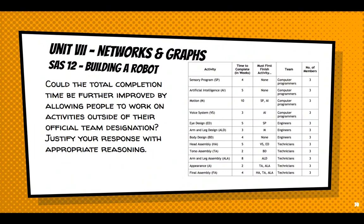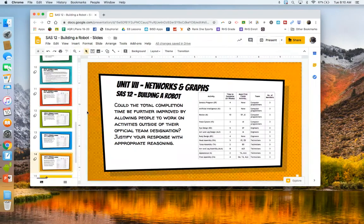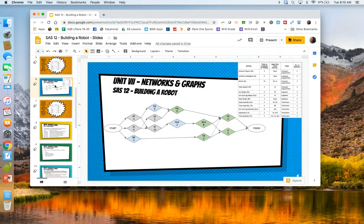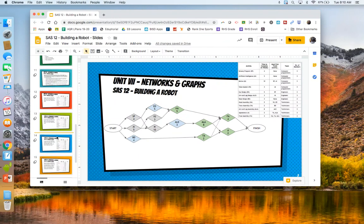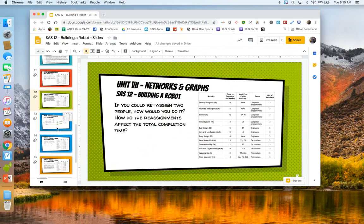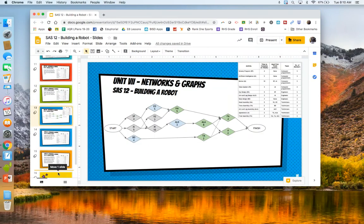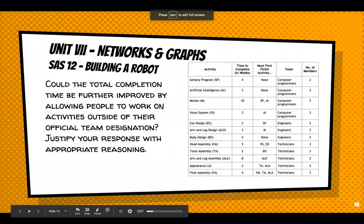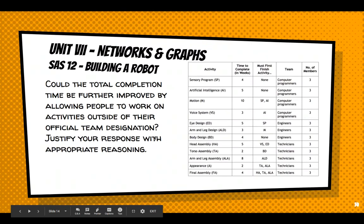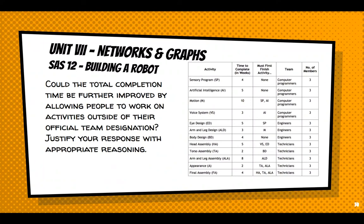All right. This is the same thing, how many people would you could assign anybody? How would do the reassignments affect total completion? It could vastly reduce the total completion time. All right, could the total completion time be further improved by allowing people to work on activities outside of their official team designation? Now I'm going to do ourselves a favor here, I'm going to back out here, I'm going to go back up to where the activity graph is. And I'm going to duplicate the slide slide. So we can look at it closer to that. I think that's down here. Yes, that's it. So let's look at that question again.